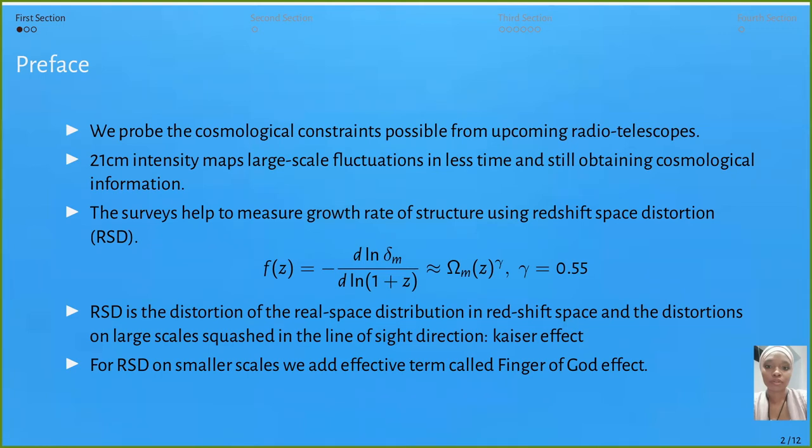With H1 intensity mapping, we investigate the possibility of performing cosmological studies using radio telescopes in single dish modes and interferometer mode. The surveys we're dealing with are interferometer mode surveys with high angular resolution, which are good at detecting smaller scales and can map large fluctuations in less time while still obtaining cosmological information.